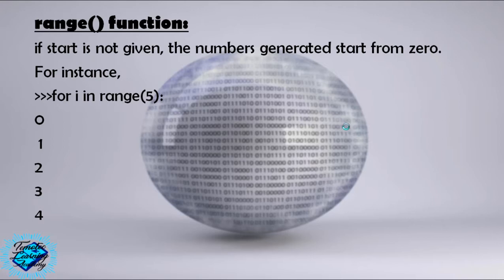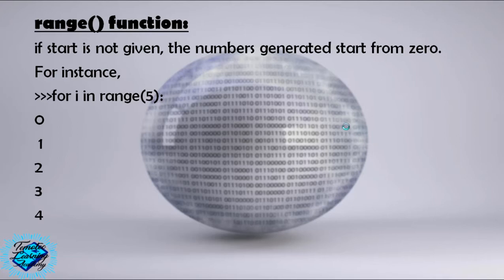The range function generates a list of numbers and has the syntax range(start, end, step). If start is not given, the numbers generated will start from zero. A useful tip to remember is that in Python and most programming languages, unless otherwise stated, we always start from zero. If step is not given, a list of consecutive numbers will be generated with step equal to one. The end value must be provided. One important thing about the range function is that the given end value is never part of the generated list.